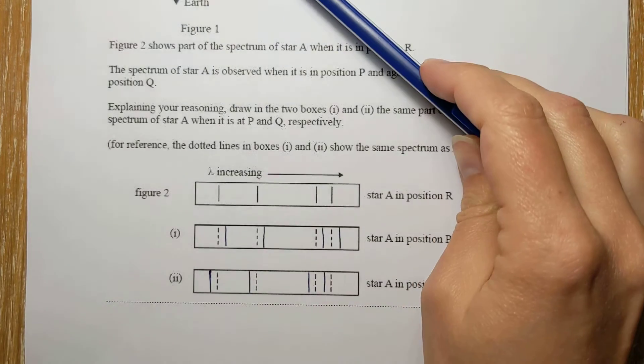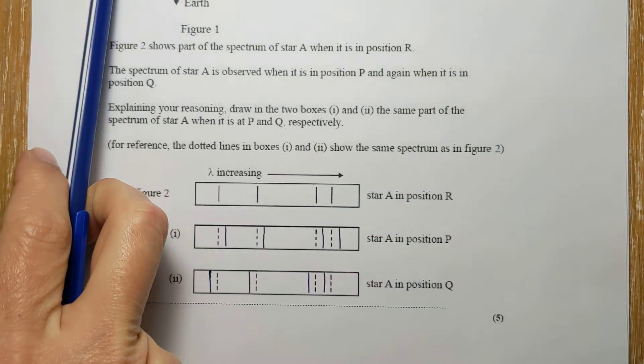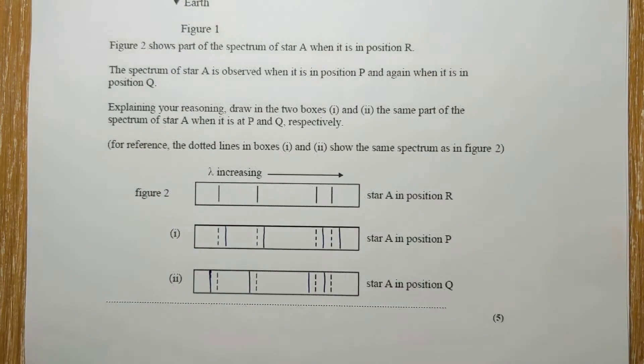Moving towards us at Q so the light is blue shifted, and moving away from us at P so the light is red shifted.